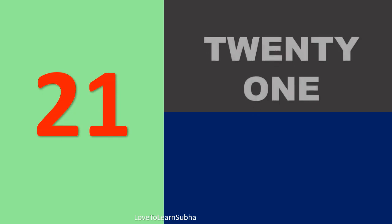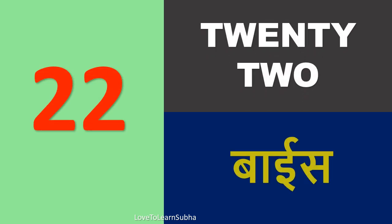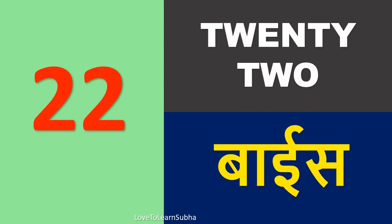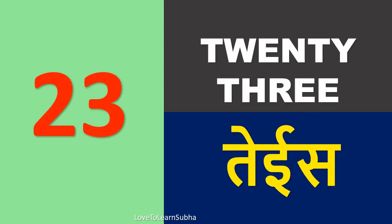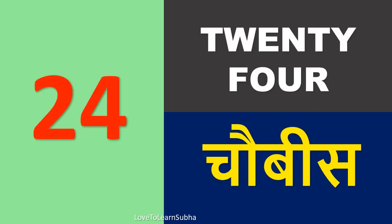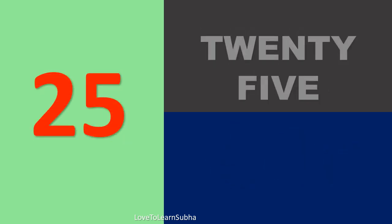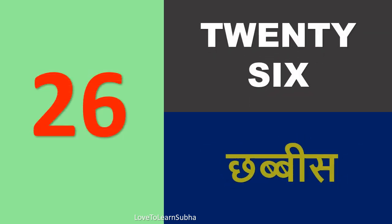21 – Ikkis, 22 – Baeis, 23 – Teis, 24 – Chowbis, 25 – Pachis, 26 – Chabbis.